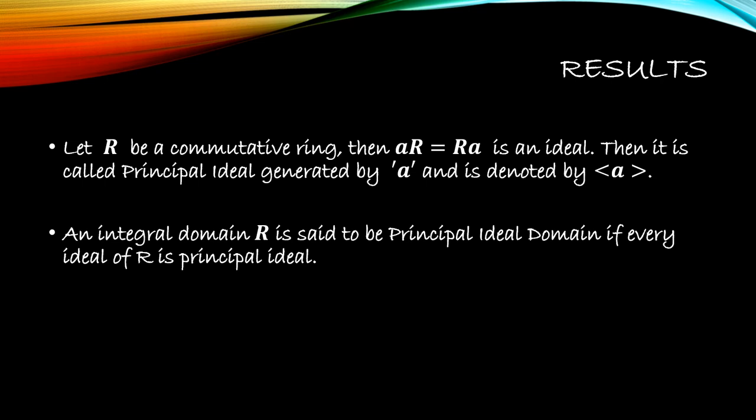I is called an ideal of R if I is both a left ideal and a right ideal. Result: Let R be a commutative ring; then AR equals RA, that is the left ideal equals the right ideal — and this is called the principal ideal generated by A, denoted by capital R. An integral domain capital R is said to be a principal ideal domain if every ideal of R is a principal ideal.